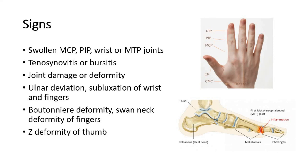Later signs include joint damage and deformity, where we might see ulnar deviation and subluxation of the wrist and fingers, boutonnière deformity of fingers, swan neck deformity of fingers, and on the thumb, there might be Z-deformity.